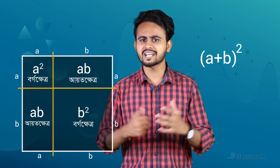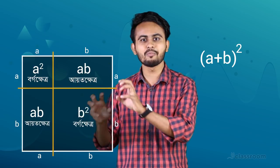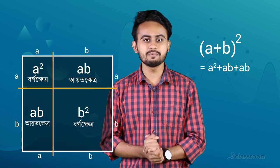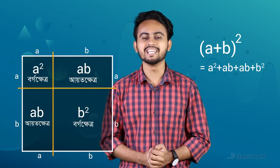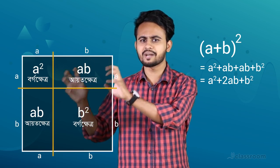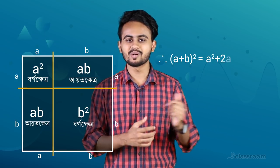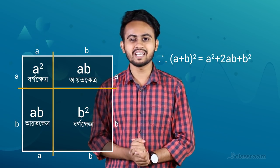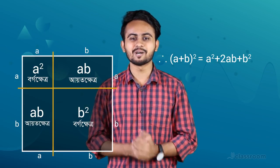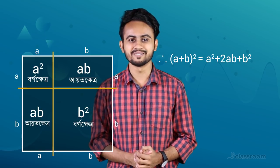This creates multiple sections. The total area of this square is a plus b whole square, which equals a square plus twice a b plus b square. You can see how the sections match the formula.